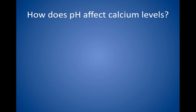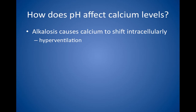How does pH affect calcium levels? Alkalosis can cause symptoms similar to hypocalcemia through effects on the ionized fraction of calcium, because alkalosis causes calcium to shift intracellularly. Clinically, this scenario is most common with hyperventilation and anxiety syndromes, in which the patient eliminates too much carbon dioxide, becomes alkalotic, and develops perioral and extremity tingling. Treat by correcting the pH. Reduce anxiety if hyperventilation is the cause.